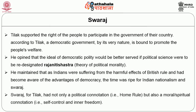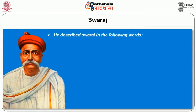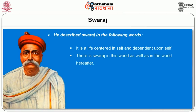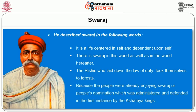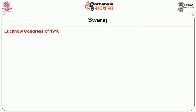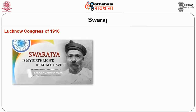Swaraj for Tilak had not only a political connotation but also a moral-spiritual connotation. He described Swaraj as a life centred in self and dependent upon self, with Swaraj existing in this world as well as in the world hereafter. At the Lucknow Congress of 1916, Tilak raised the famous slogan of Swaraj is my birthright. In the same year, he and Annie Besant started the Home Rule League.